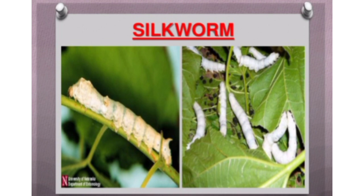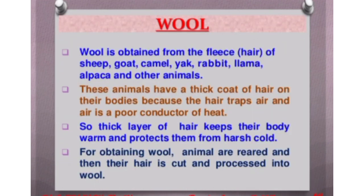First of all we will discuss wool. We obtain wool from the fleece - that is the hair of different animals, for example sheep, goat, camel, yak, rabbit, etc. These animals have a thick coat of hair on their bodies because the hair traps air, and air is a poor conductor of heat. So a thick layer of hair keeps their body warm and protects them from harsh cold. For obtaining wool, animals are reared and then their hair is cut and processed into wool.